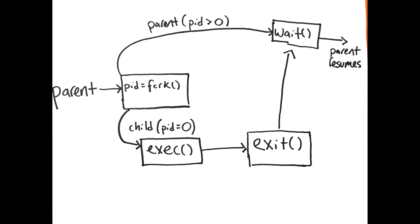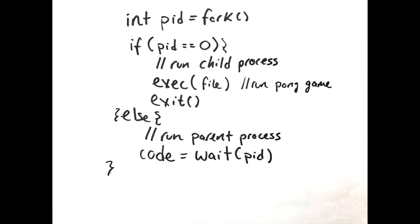When a child process is created, it returns zero and the parent process returns the PID of the child process. Checking the return value indicates whether this is the parent or child process. Both continue to execute at the same line of code unless exec is called by the child. This pseudocode demonstrates how processes are checked for whether they are a parent or child process.